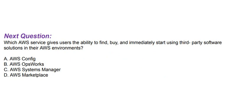Today's question is: Which AWS service gives users the ability to find, buy, and immediately start using third-party software solutions in their AWS environments? Option A: AWS Config. Option B: AWS OpsWorks. Option C: AWS Systems Manager. Option D: AWS Marketplace.